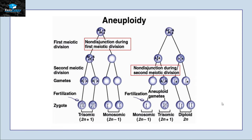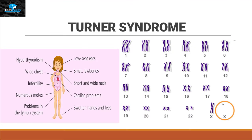A real-life example of aneuploidy is Turner syndrome — a type of disease that usually occurs in women in which we lose one sex chromosome, the X. We have 22 pairs of autosomic chromosomes and are missing one X chromosome. Individuals with Turner syndrome have low-set ears, small jaw bones, short and wide neck, cardiac problems, swollen hands and feet, hyperthyroidism, wide chest, infertility, numerous moles, and problems in the lymphatic system.